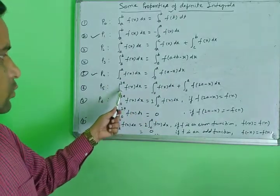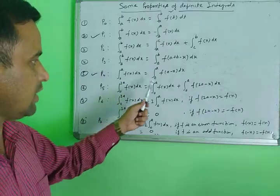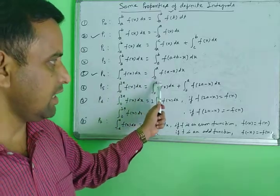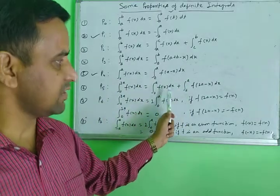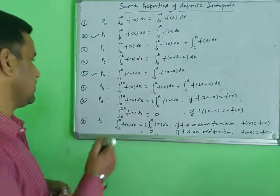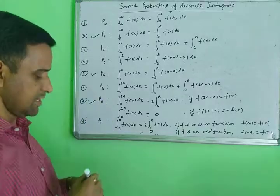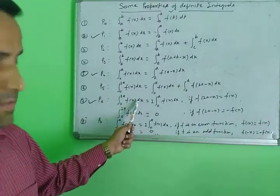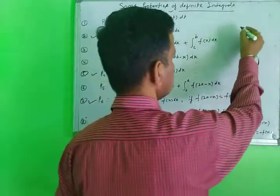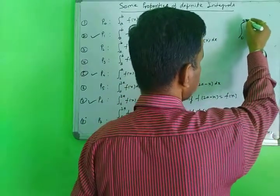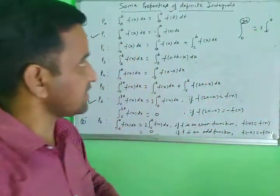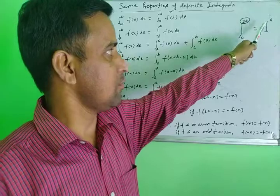Property P5: the integral from 0 to 2a of f(x) dx can be broken into two parts from 0 to a. The first function remains f(x) dx, but the second function is changed to f(2a minus x). Property P6 is very important: for the integral from 0 to 2a, if you divide the upper limit by 2, you multiply by 2.